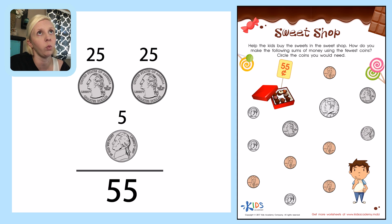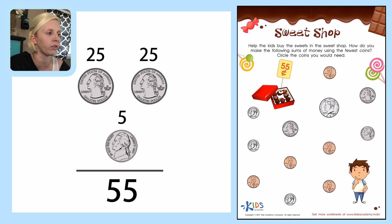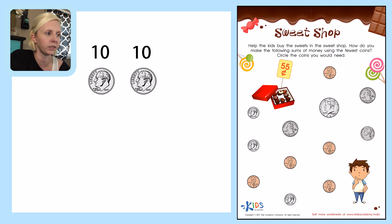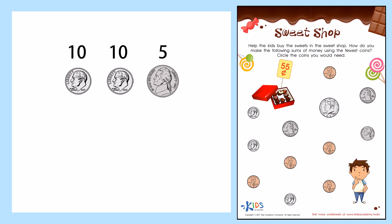Now I also know that we can take dimes and nickels to make 25 cents. Let's see if that works. Let's do 10 cents, which is a dime, and another 10 cents, which is a dime — I see two dimes right over here. And let's do five cents — that's the nickel. That equals 25.